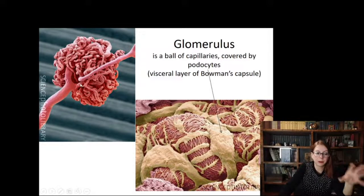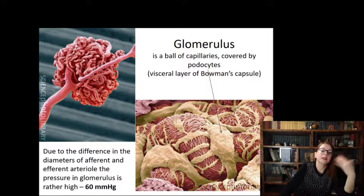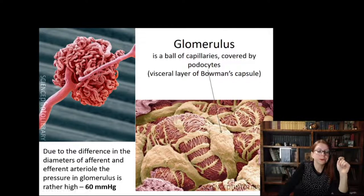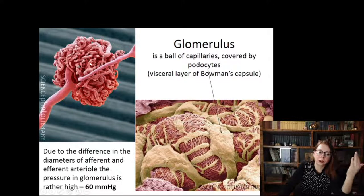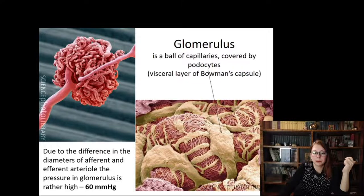In the corrosion cast specimen, we find that the diameters of the afferent and efferent arterioles differ from one another, creating increased blood pressure inside the capillaries — normally pressure is much lower and blood moves slowly to allow gas exchange. But here, no gas exchange takes place; instead, under very high pressure the liquid portion of blood percolates through the capillary walls, creating primary urine.